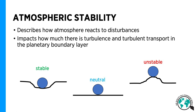Thus, we can say that atmospheric stability is something which describes how the atmosphere reacts to disturbances. It impacts how much turbulence there is in the boundary layer and how efficient the turbulent transport is in the planetary boundary layer.